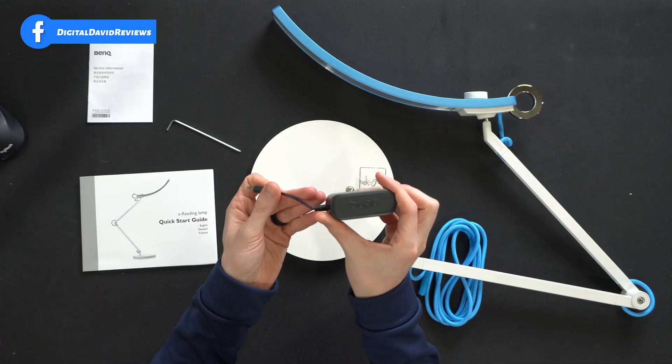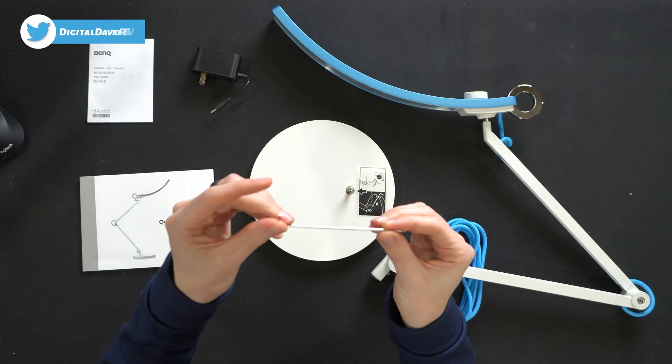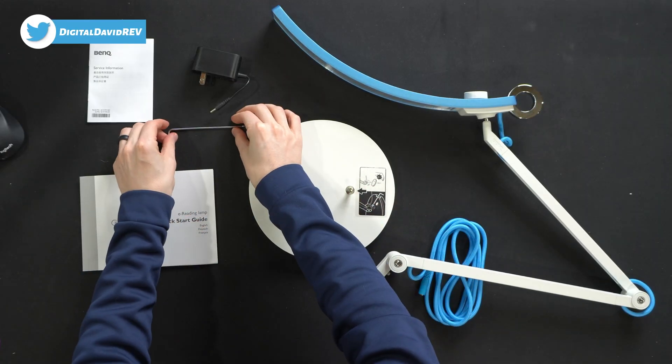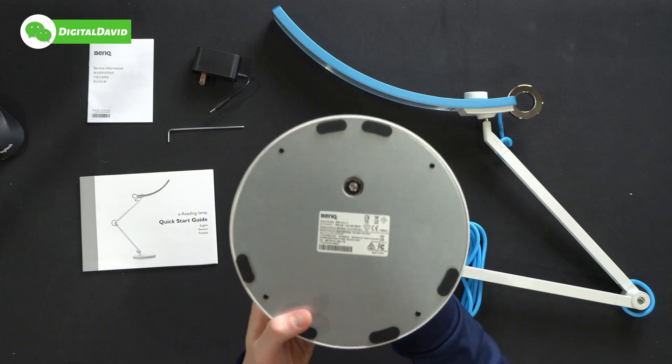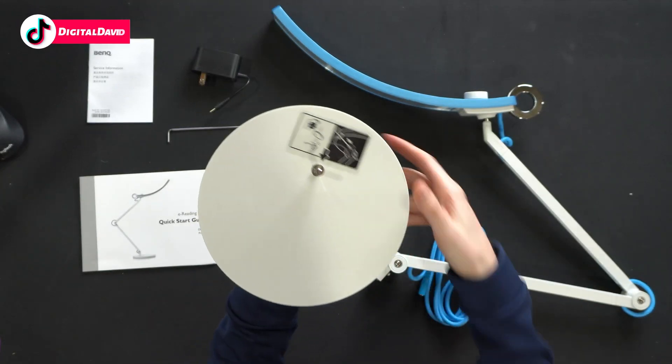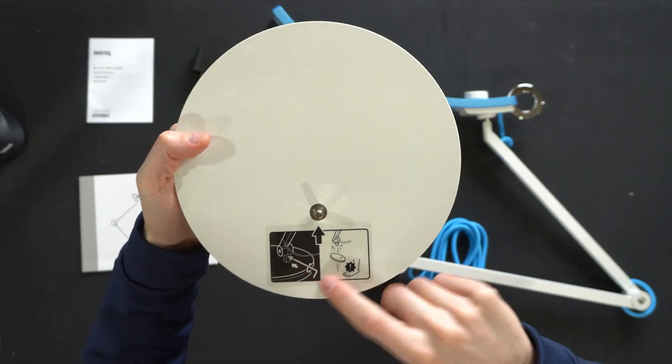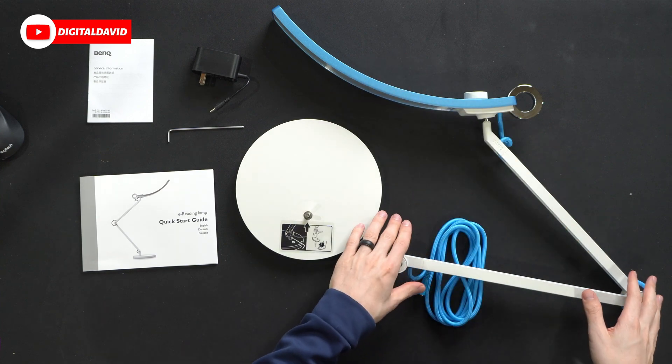Next, we have our power supply and adapter with BenQ's logo and branding. We have our nice Allen wrench tool to properly install everything. We have a super heavy, at least 10 pounds base. This base plate is so heavy. Don't drop it on your foot, people. You've been warned. That would hurt so bad. And then lastly, we have the lamp itself.